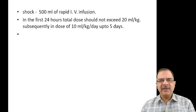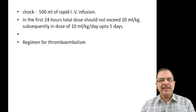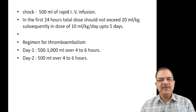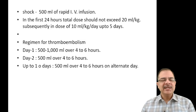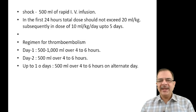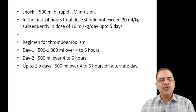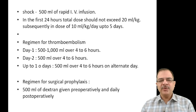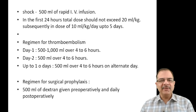Dextran dosing: in shock, give 500 ml rapid IV infusion; in the first 24 hours keep it under 20 ml/kg, then 10 ml/kg/day for up to 5 days. For thromboembolism prophylaxis: day 1 give 500–1000 ml, day 2 give 500 ml, and up to 10 days 500 ml over 4–6 hours on alternate days. For surgical prophylaxis: 500 ml can be given.